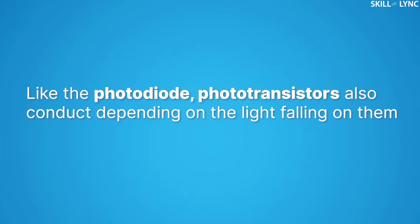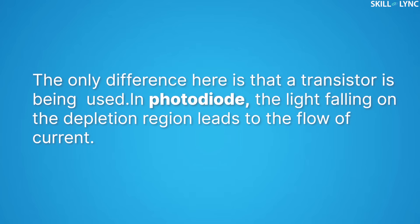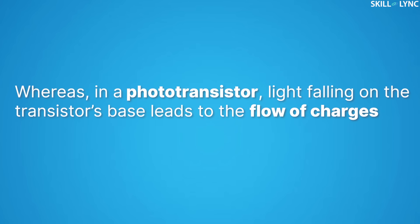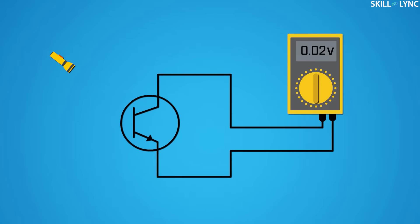The next type of light sensor is the photo transistor. Like the photo diode, photo transistors also conduct depending on the light falling on them. They are used for position sensing, security systems, etc. The key difference is that a transistor is used instead of a diode — in a photo diode, light falling on the depletion region leads to current flow, whereas in a photo transistor, light falling on the transistor's base leads to the flow of charges. The photo transistor is more sensitive to light compared to the photo diode.